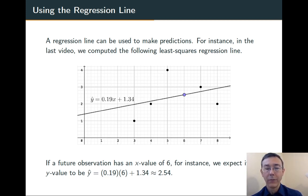In this case we get 2.54. We can plot it on the line. Here I've put it with a blue dot at 6 comma 2.54.